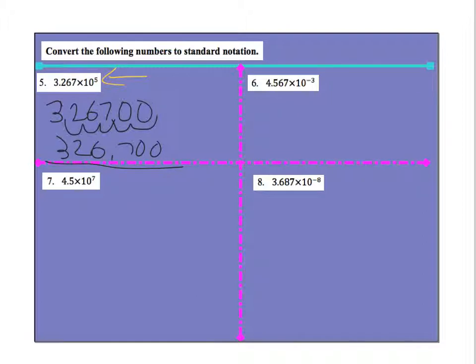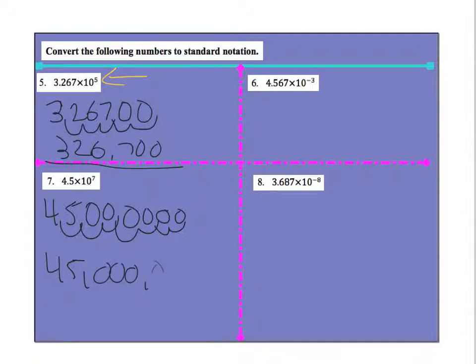Skip down here, number 7. I go 4, then I move it over once for 5, then I keep adding zeros until I get to 7. So my answer becomes 45, 1, 2, 3, 1, 2, 3, 45 million.